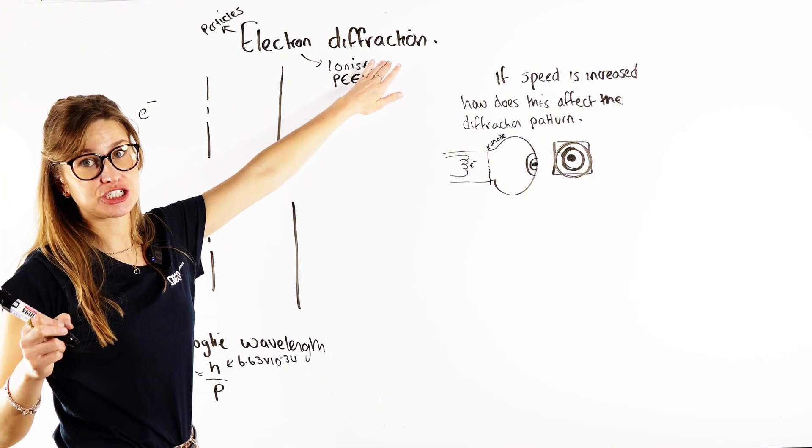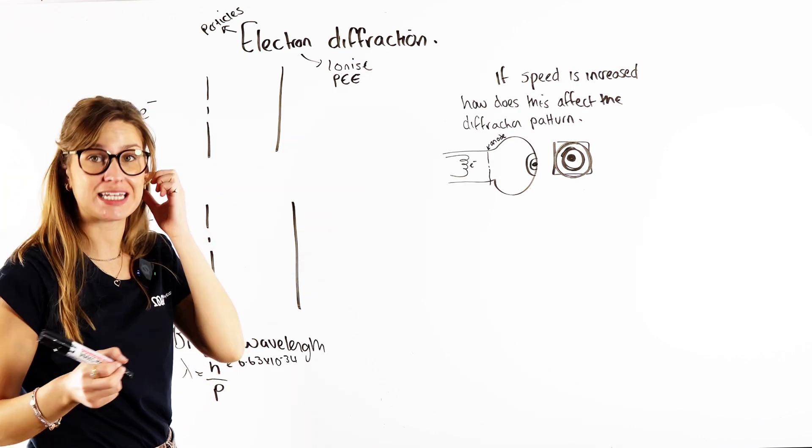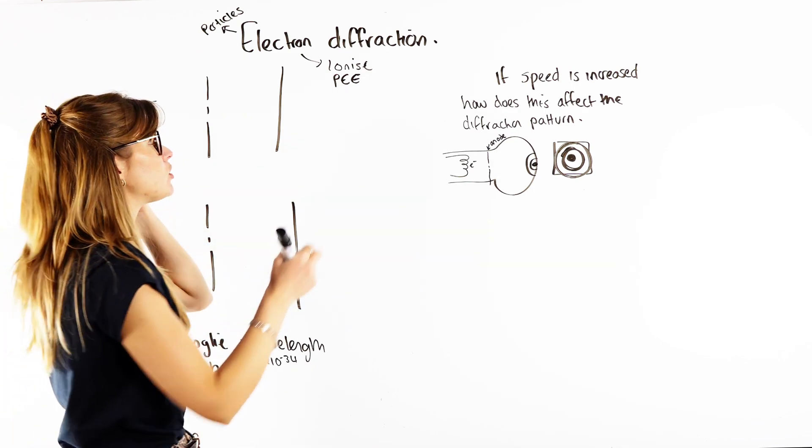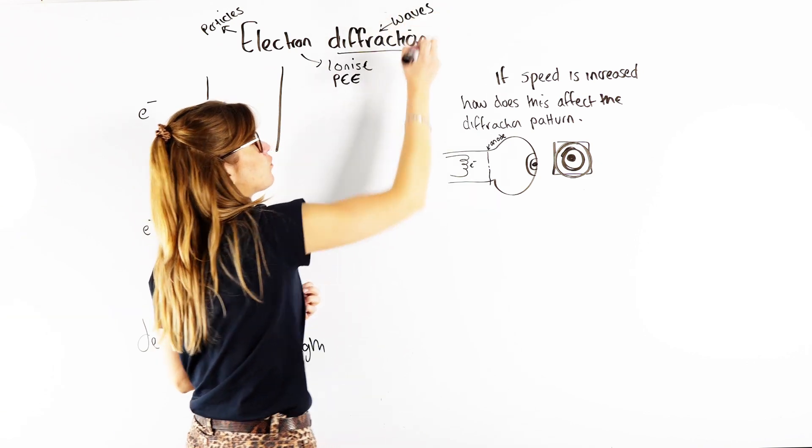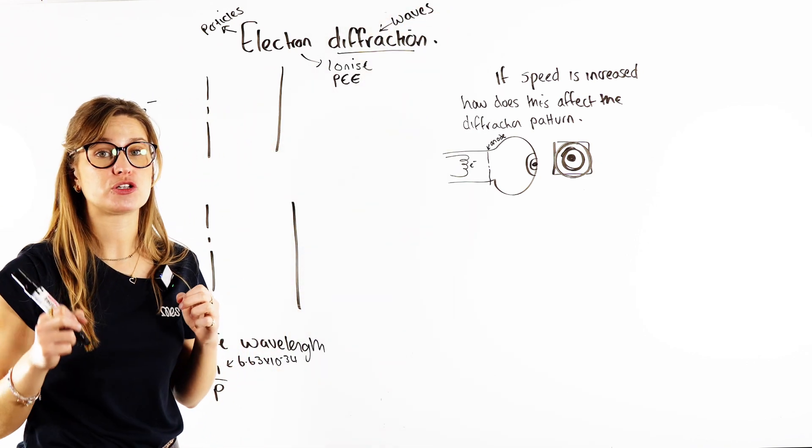But because of the diffraction experiment, so think about Young's double slit experiment with light rays, we also know that electrons can diffract. So we also know that electrons can behave as waves. And that's our wave-particle duality.